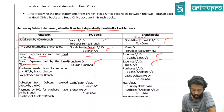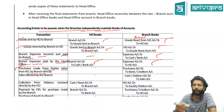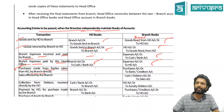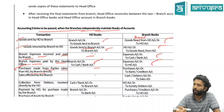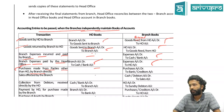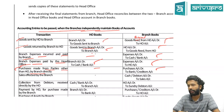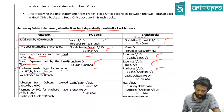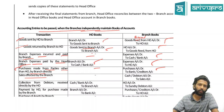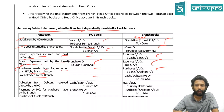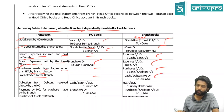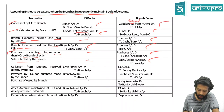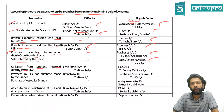Next: purchases made directly by the branch from parties other than HO. HO has no role, so no entry in HO books. Branch passes normal purchase entries: Purchase to Cash for cash purchase, Purchase to Bank for cheque, Purchase to Creditors for credit purchase. Next: sales made by the branch. HO has no role. Branch passes: Debtors to Sales for credit sale, or Cash to Sales for cash sale.